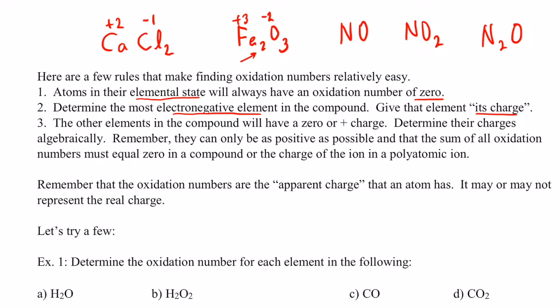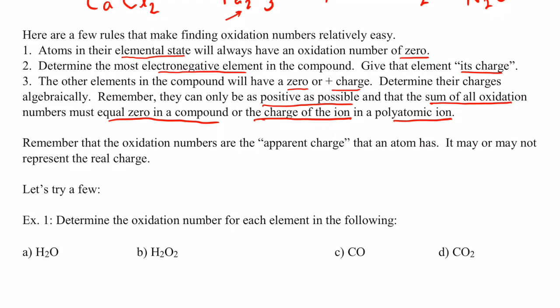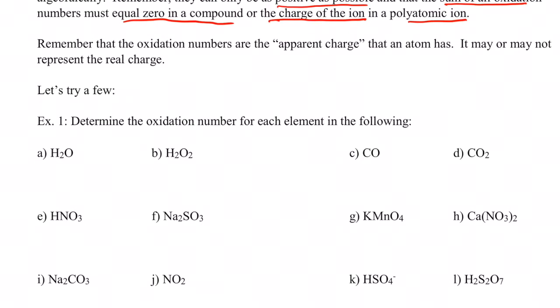The other elements in a compound will have a charge of zero or a positive charge — this is true 99.9% of the time. We determine their charges algebraically. Elements can only be as positive as possible, and the sum of all oxidation numbers must equal zero in a compound, or equal the charge of the ion in a polyatomic ion. Remember, oxidation numbers are apparent charges that an atom has — they may or may not be the real charge.